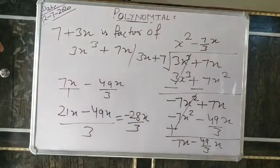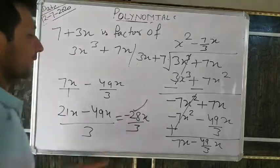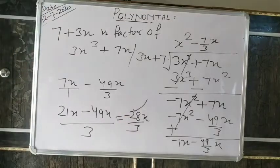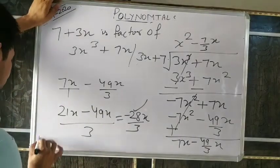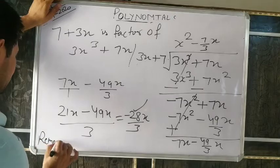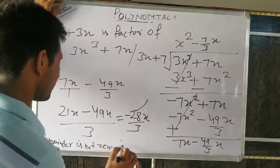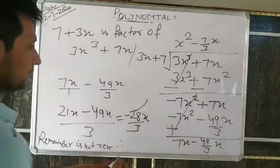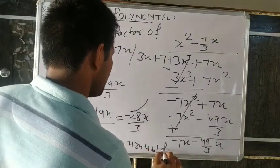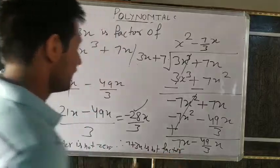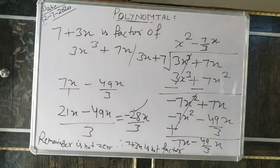Always remember: write a number in the quotient, multiply it — same term, same sign, same term will be cancelled. Then change the sign always. Understand? Now I am giving homework: Example number 6, 7, and 8. Do examples 6, 7, and 8 in your notebook. Remainder theorem is not in our syllabus — it is deleted. Okay. Have a nice day everyone.